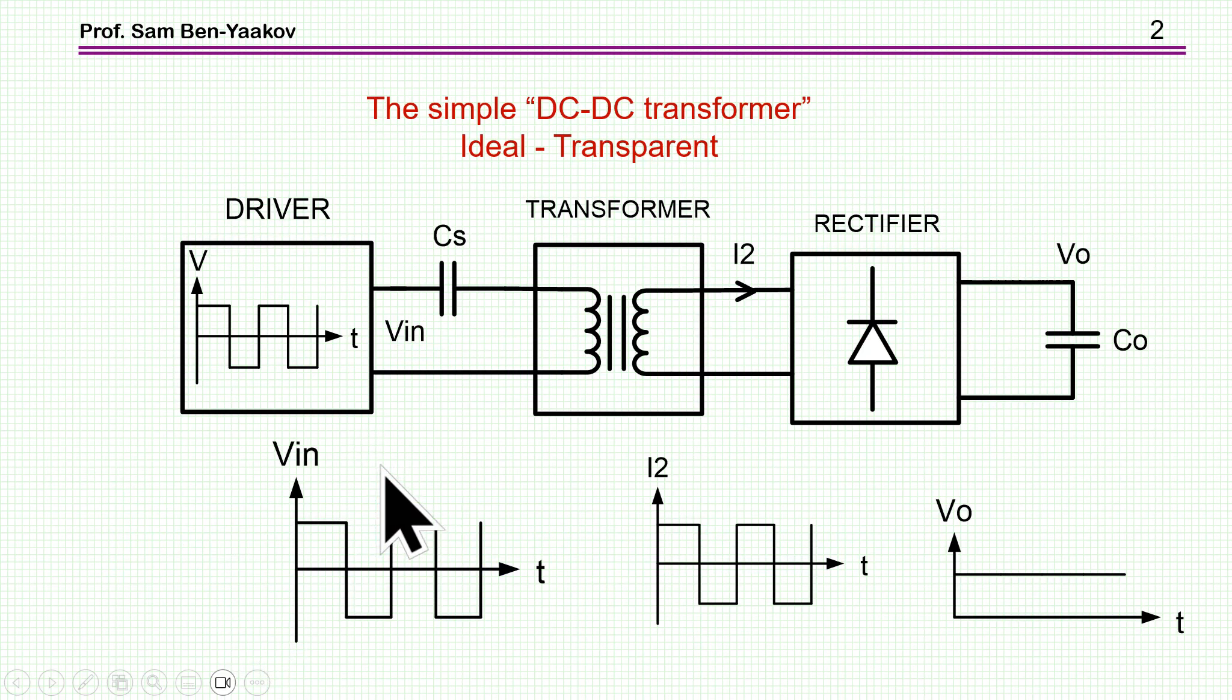In the previous presentation, I was discussing a very simple DC to DC transformer, which is very compatible with requirements of a high side drive for a MOSFET transistor as a power supply for the high side drive. It's basically a driver, a transformer, and a rectifier. We have a square wave here being transferred to the secondary, rectified, and we get an output voltage.